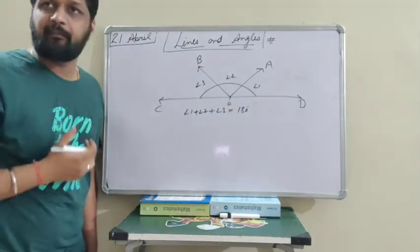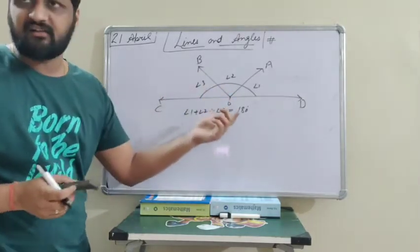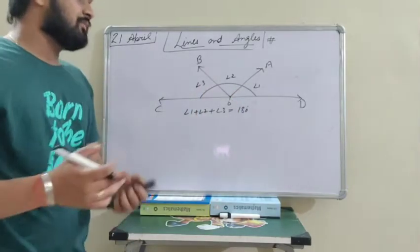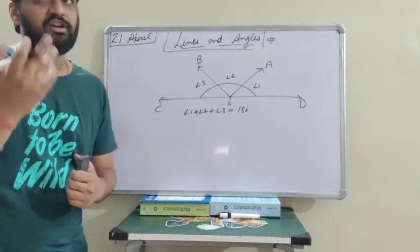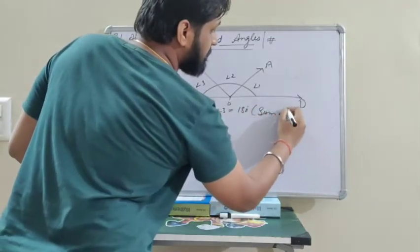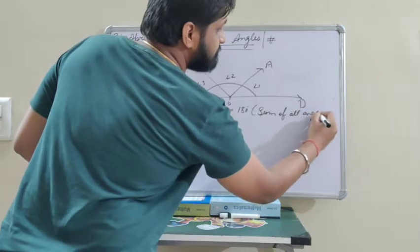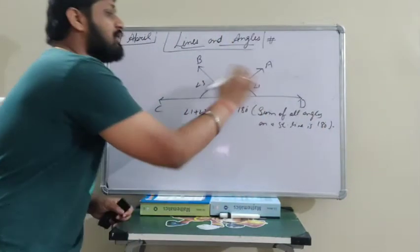When two angles are given, we will always write the reason as linear pair. But when we have more than two angles — three, four, five — on a straight line, we write: the sum of all angles on a straight line is 180 degrees. This applies whether there are three, four, or five angles. So the reason we write is: the sum of all angles on a straight line is always 180 degrees.